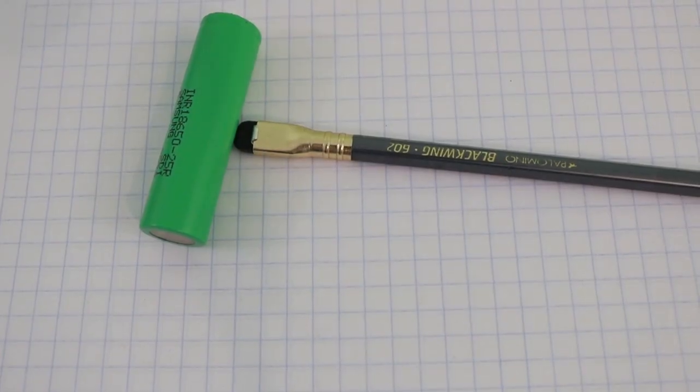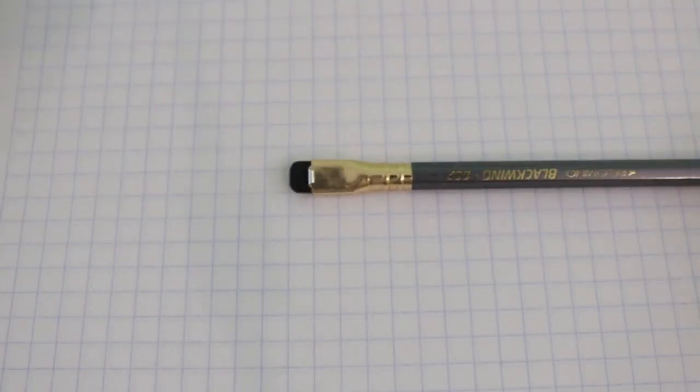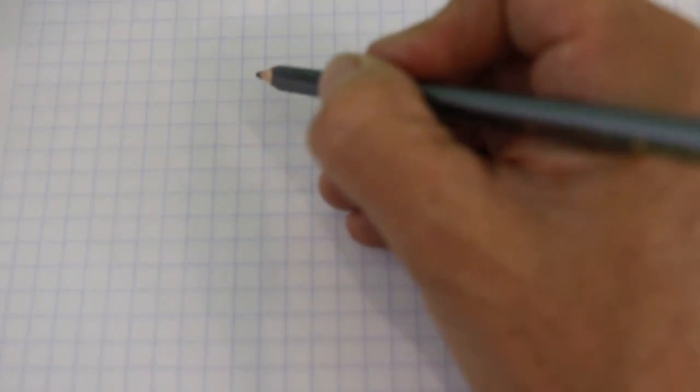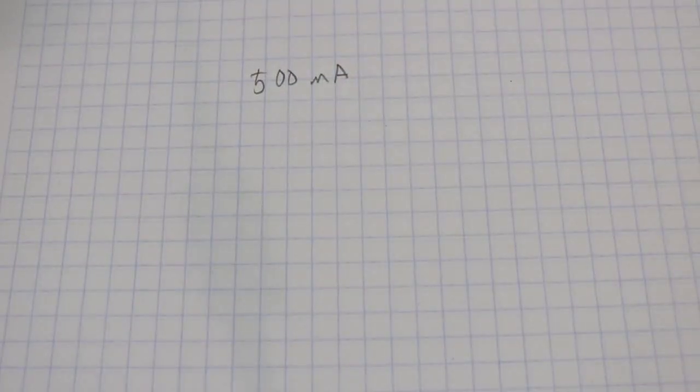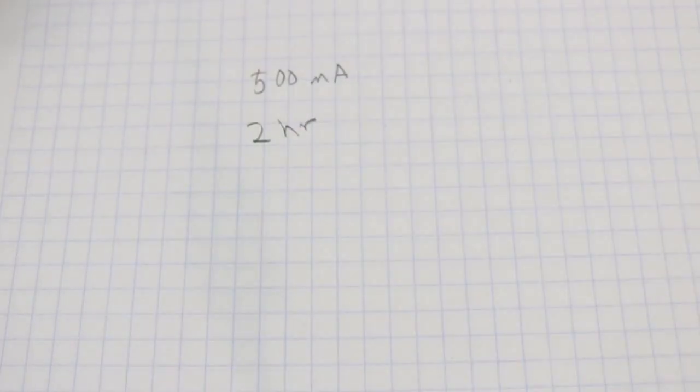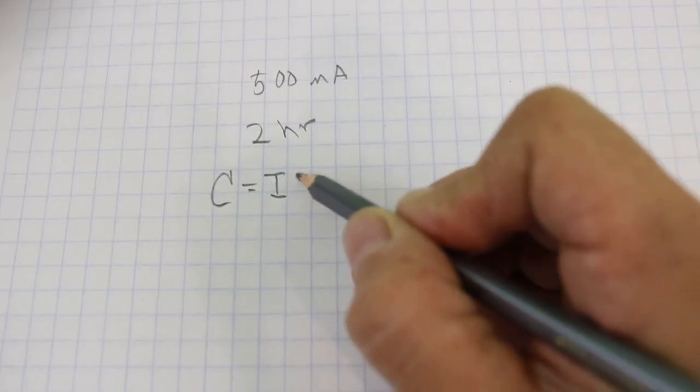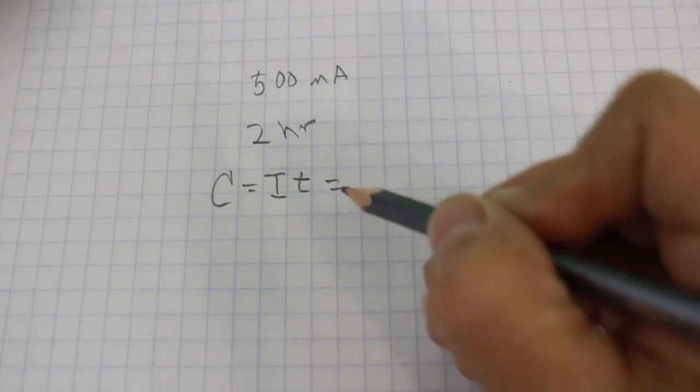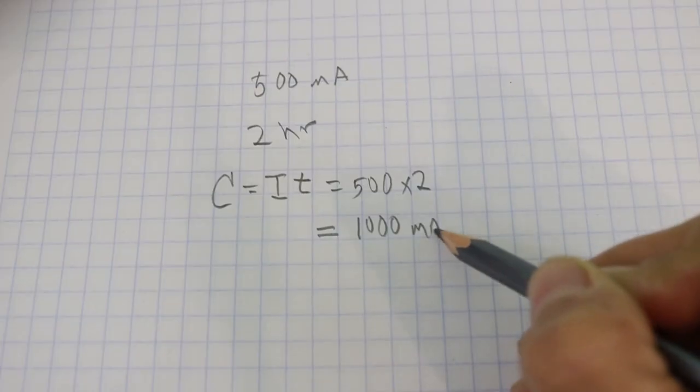In order to test the real capacity of a battery, we need to draw a constant current from the battery and check the time that it takes for the battery to completely drain out. For example, if we draw 500 milliamps constant from the battery and the time it takes to drain out is measured as 2 hours, then the capacity according to our formula is, remember, current times the time. So we will have 500 times 2 and the capacity will be 1000 milliamp hours.